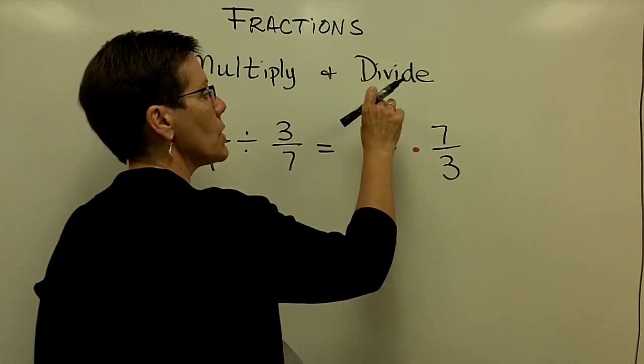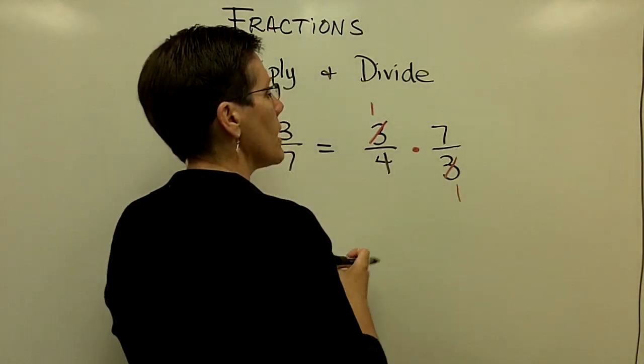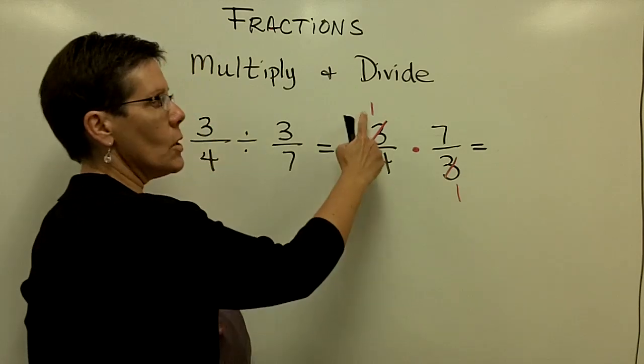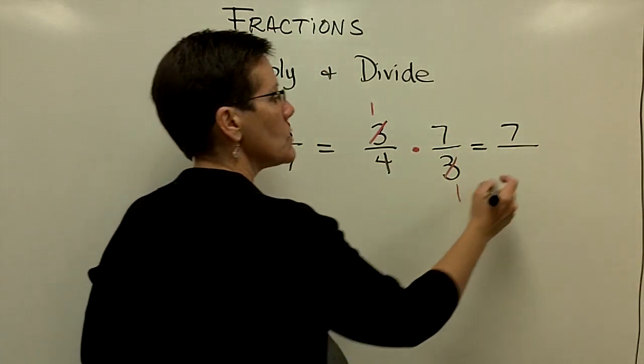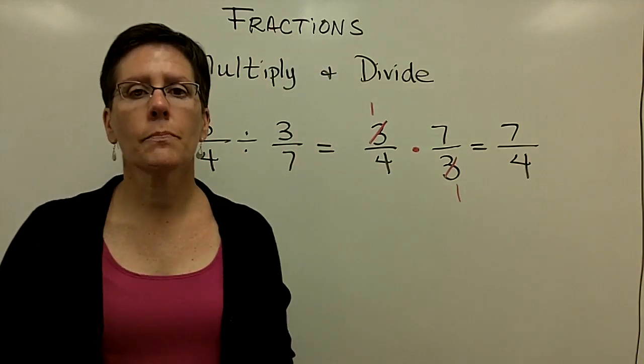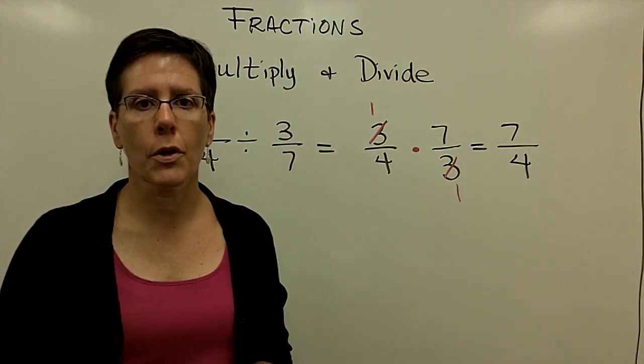and I notice that a three goes into here once, and a three goes into here once, and I'm left with, in the numerator, one times seven is seven, and four times one is four. Seven fourths, or one and three fourths.